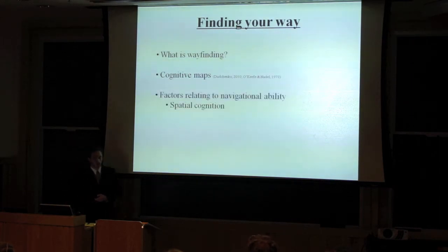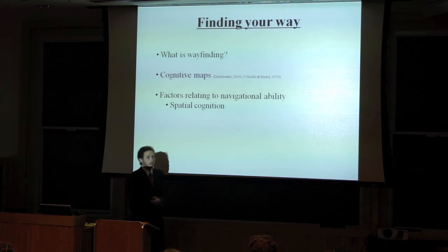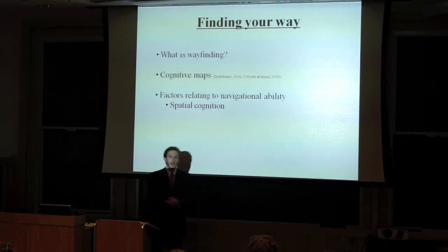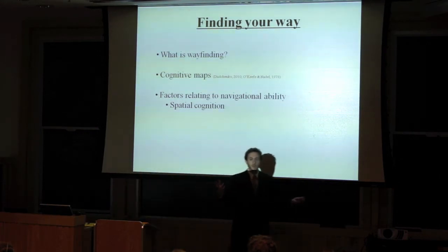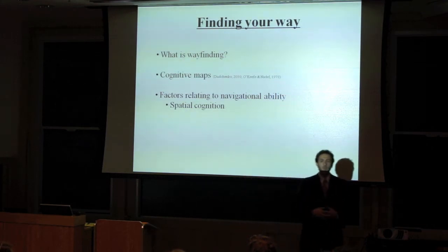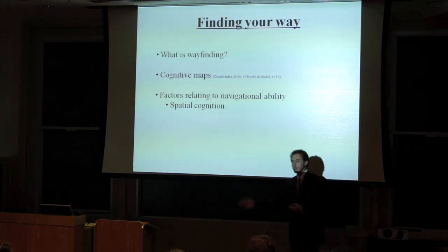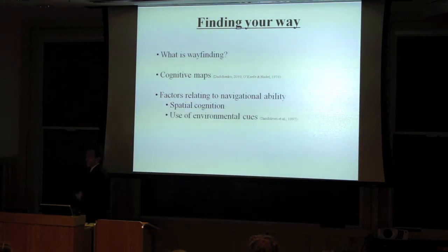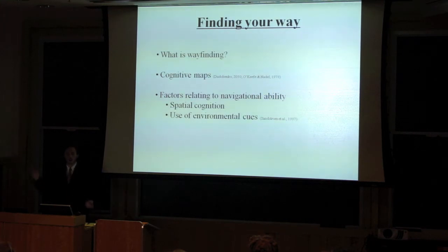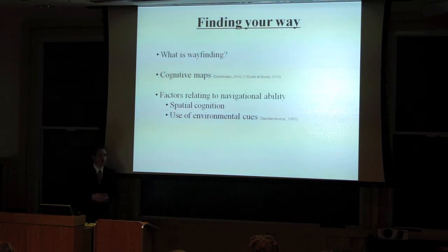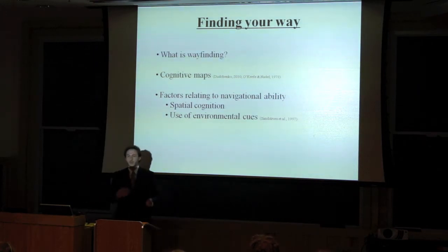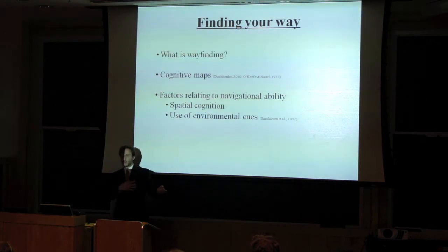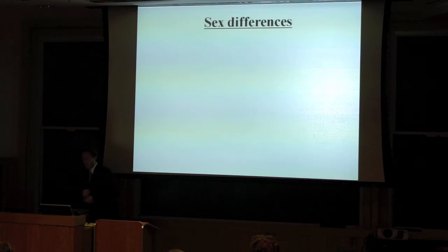So what are the factors that relate to our ability to navigate? One of them is definitely spatial cognitive ability. How well can you process spatial information, manipulate it, and then use it? And also, how well can you actually use the cues in your environment? How well can you rely on different landmarks, different environmental factors that you're able to use to orient yourself and find your way?